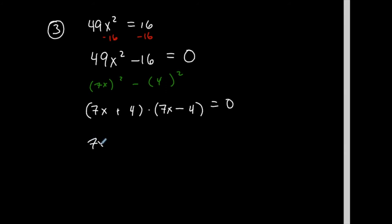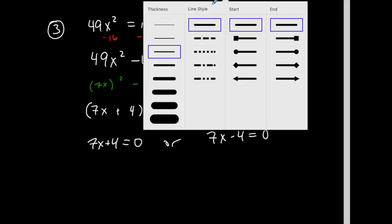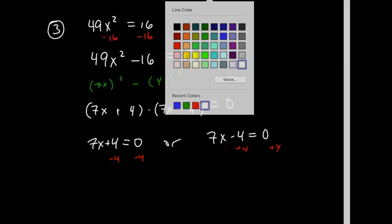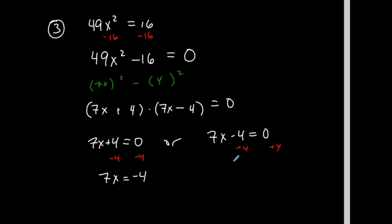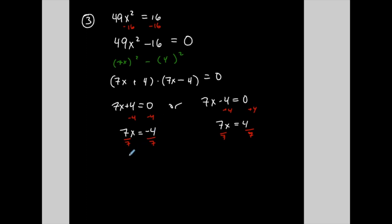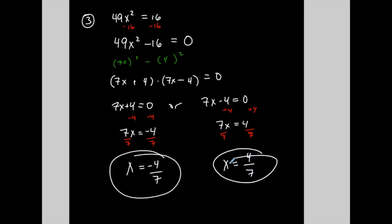I can factor it as (7x + 4)(7x - 4). I'm solving an equation, so I'm not done. I have a product equal to 0, meaning the first term could be 0 or the second term could be 0. Solving those two equations: 7x = -4 gives x = -4/7, and 7x = 4 gives x = 4/7. Two solutions. Some polynomials have more solutions — these are second-degree polynomials, so I'm expecting two solutions. Sometimes they're different, sometimes they're repeated.